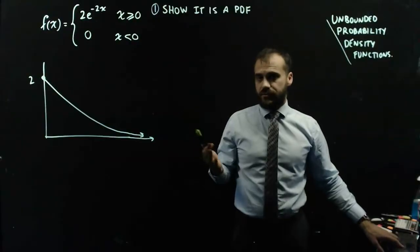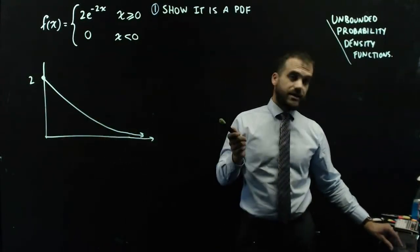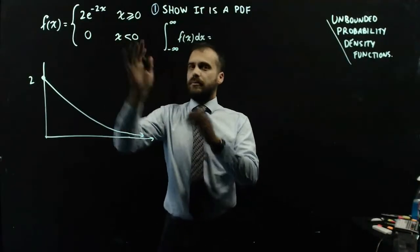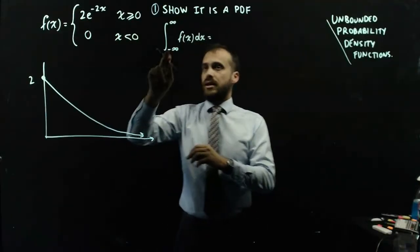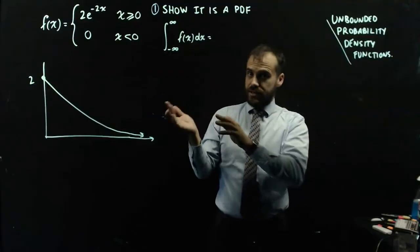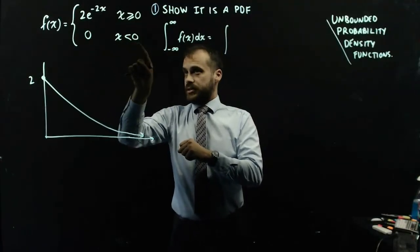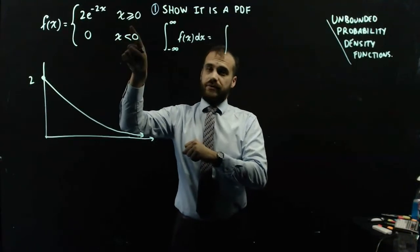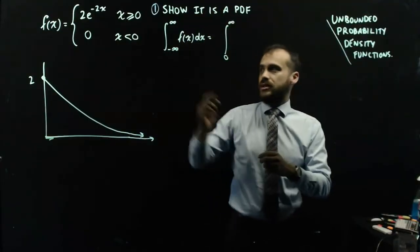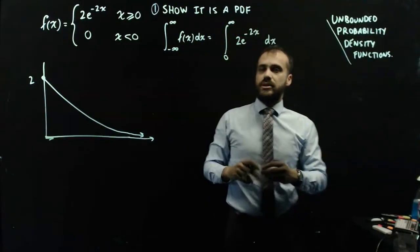I'm going to show it's a PDF first — I'm going to prove that. All PDFs are equal to 1 from negative infinity to infinity. Since the function is 0 when x is less than 0, we're only interested in the region greater than 0, so we integrate 2e to the negative 2x with respect to x from 0 to positive infinity.